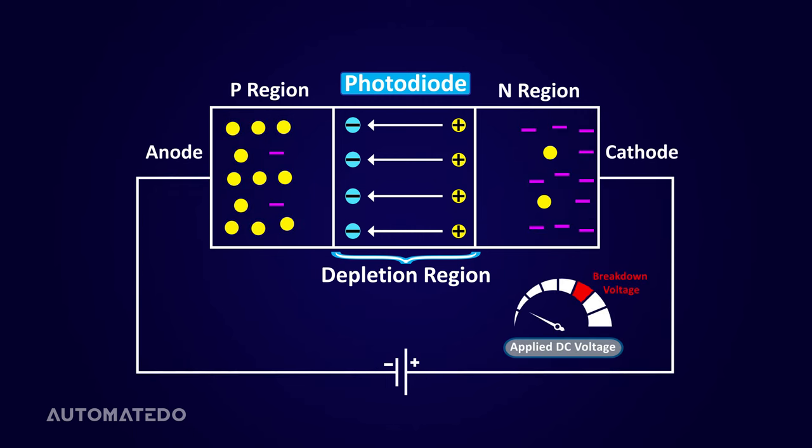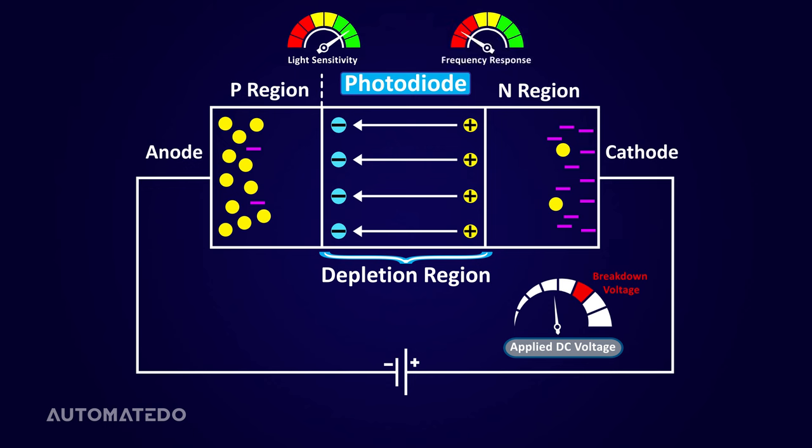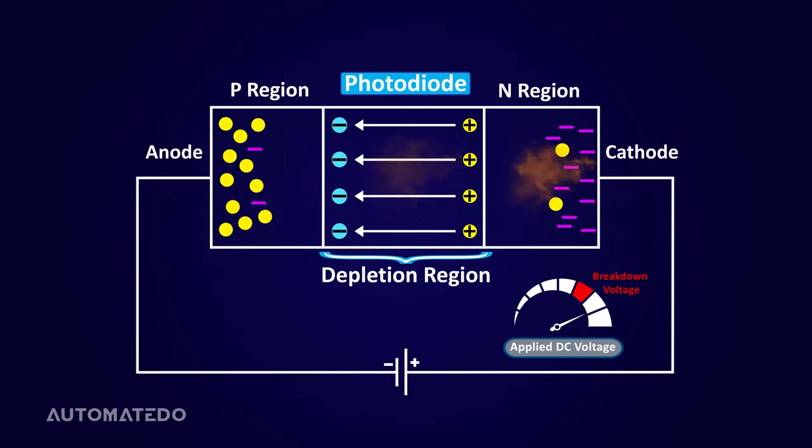It's interesting to note that if we apply a higher reverse voltage, imagine the breakdown voltage is not reached, the depletion region becomes wider. However, this change is hardly discernible. Since the surface area becomes wider in this condition, the photodiode becomes more sensitive to light but the frequency response slows down and if we surpass the breakdown voltage, the photodiode may be damaged.